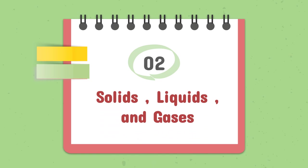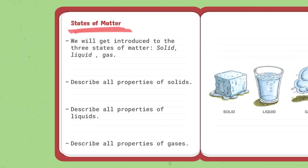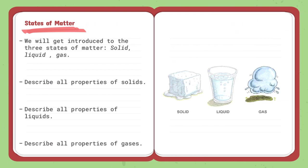Moving on to topic two, which is solids, liquids, and gases. The first lesson of the second topic is states of matter. We will get introduced to the three states of matter - solid, liquids, and gases. We will take each one separately, starting off with describing all properties of solids. How is the particle of a solid formed? What are the physical properties of a solid and examples of it? Moving on to liquids, how are the particles of a liquid formed? What are the physical properties of liquids and examples of it? And lastly, we will talk about the gases, how the particles are formed, and what are the physical properties of gas.